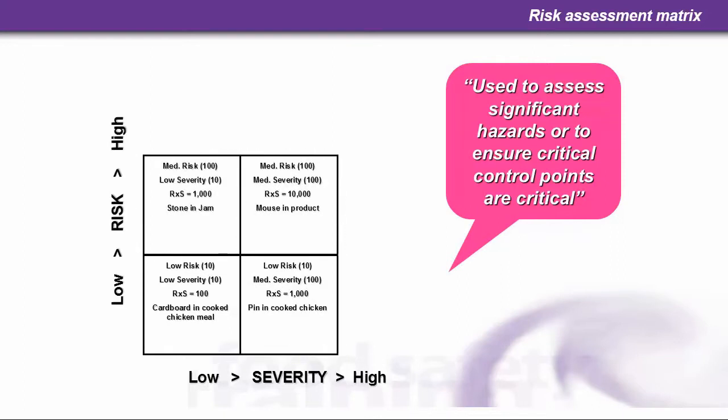Looking at medium risk examples — a stone in jam, a mouse in product, and a pin in cooked chicken. The stone in jam is a medium risk because stones are likely to get in with the fruit into the food preparation area. However, the severity is low — a consumer would probably feel or taste it before it does any damage. With a mouse in product, there's a medium risk; a mouse can get into bread, for example, ending up in a mixing machine in a bakery and cooked with the bread. The severity is medium — it could cause food poisoning, but it's not a high risk or high severity product.